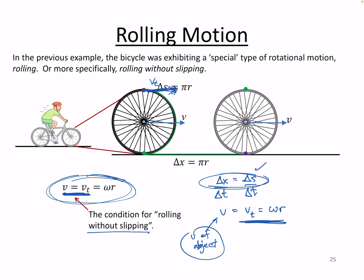And if both of those are true, then the acceleration of the bicycle and its wheels also has to equal the tangential acceleration of the points on the edge of the wheel, which in turn equals alpha times r. So that's also a condition for rolling without slipping. Depending on the problem you're solving, one or the other of those conditions is useful. In this class, we're generally not going to consider cases of rolling with slipping, because things get considerably more complicated.